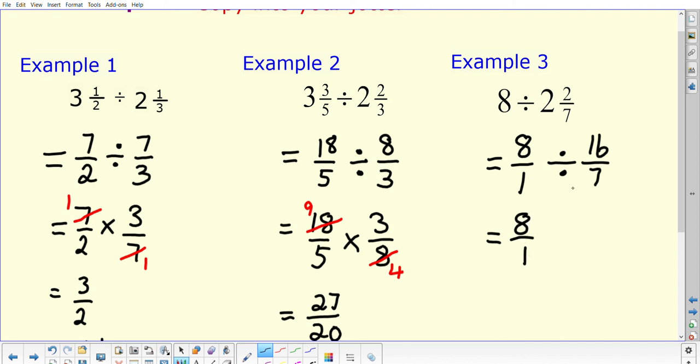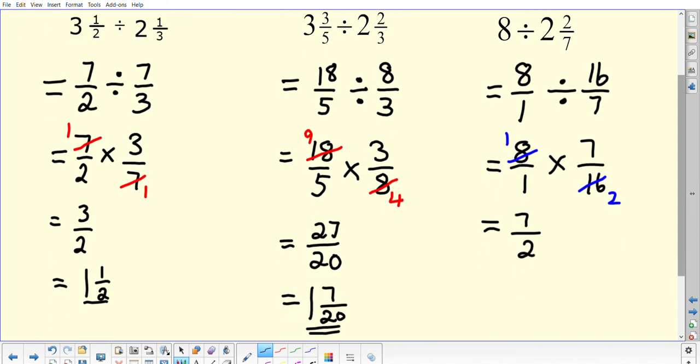You're then ready to use the keep, so keep the 8 over 1. Your switch, the divide to times, and you flip the 7 over 16. Hopefully you can see that you can cancel between the 8 and the 16, so 8 into 8 is 1, 8 into 16 is 2. And you're then left with doing 1 times 7 on the top, 1 times 2 on the bottom, so 7 over 2. We can change that into a mixed number. If you do 2 into 7, it goes 3 times and you get a remainder of 1. So when you write out your fraction and your answer, you would have 3 whole pieces and 1 half left over, so 7 over 2 is the same as 3 and a half.